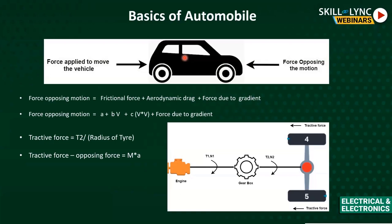The basic purpose of an automobile is locomotion. If you look at Karl Benz's vehicle, it was actually an electric vehicle, not a conventional internal combustion engine. The basic purpose is to move at a higher velocity than a human being. Now let's understand what forces act on an automobile when it is moving at a velocity v.